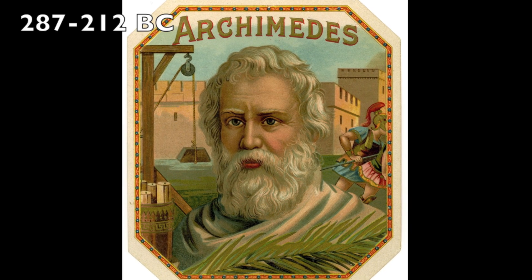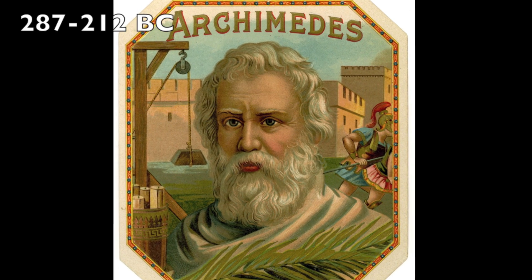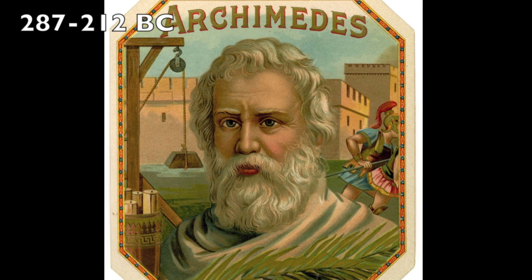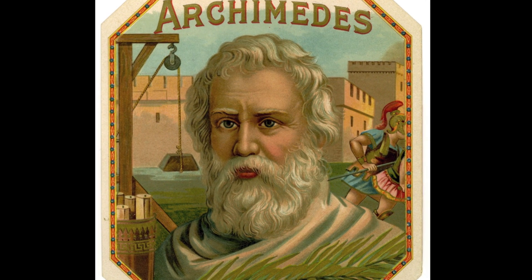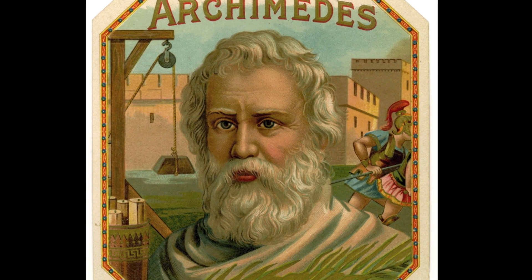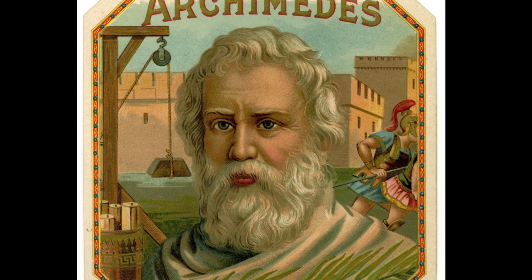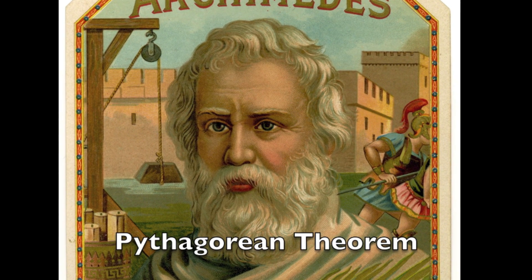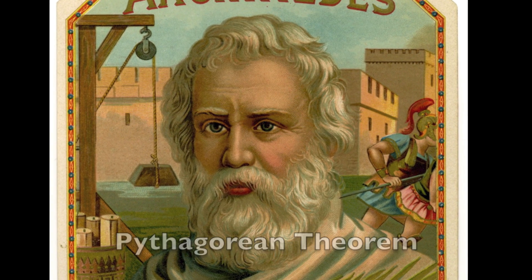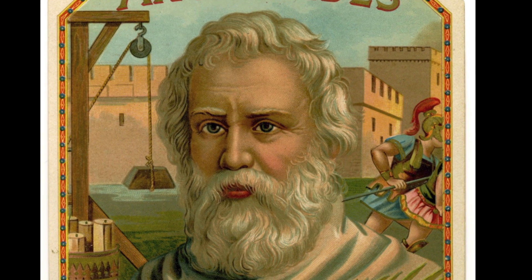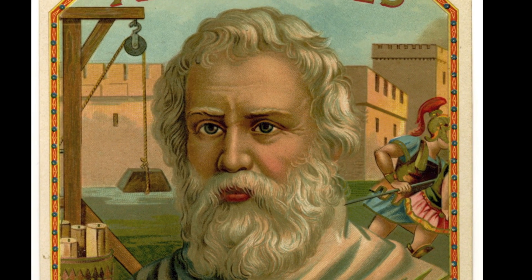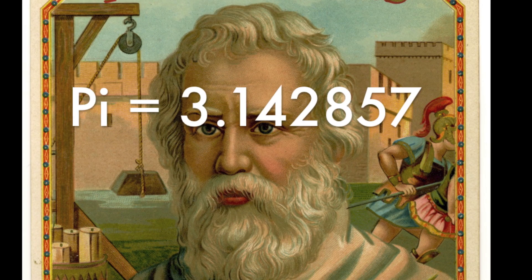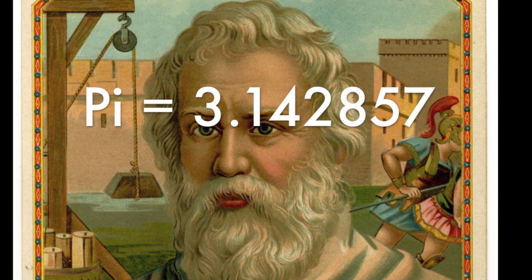In 287 to 212 BC, the first calculation of Pi by Archimedes was completed by using the Pythagorean theorem. His work showed that Pi was equal to 3.142857.